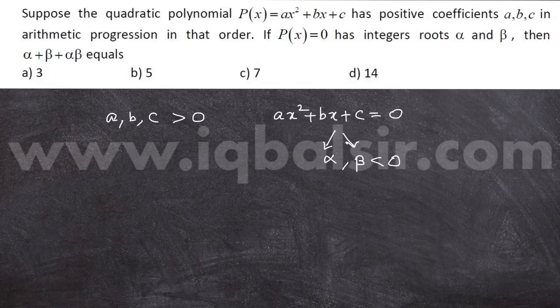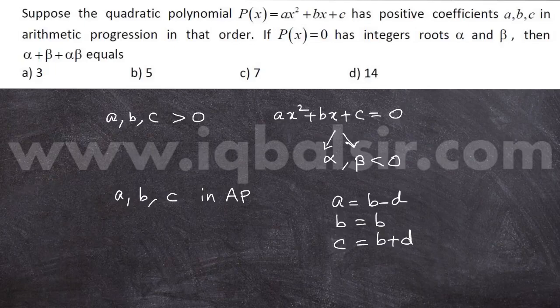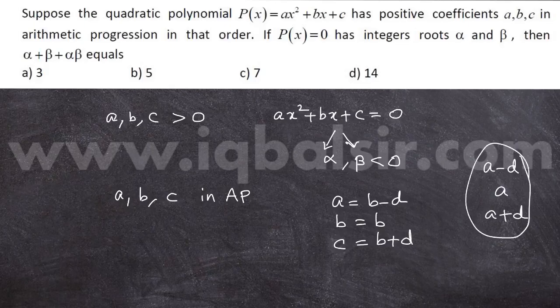We have a condition which says a, b, c are in AP. So I am going to consider a = b − d and c = b + d, with b as b itself. Note this point: three numbers in AP can always be taken in the form a − d, a, a + d. So I have taken a as b − d, b as b itself, and c as b + d.